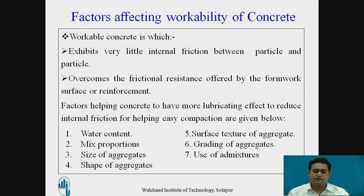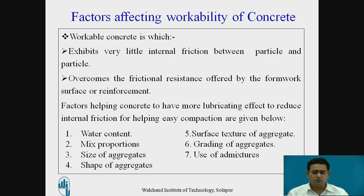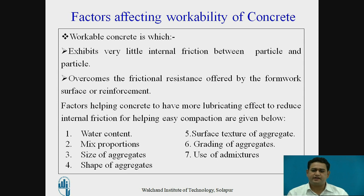The fifth factor is the surface texture of the aggregate. Surface textures are of two types: smoother and rougher. Smoother aggregates give good workability compared to rougher ones. The sixth factor is the grading of aggregates. Well-graded aggregates give good workability for the concrete, while poorly graded aggregates give poor workability.